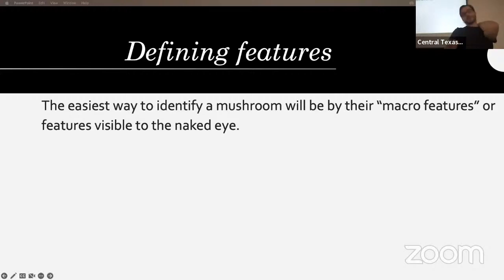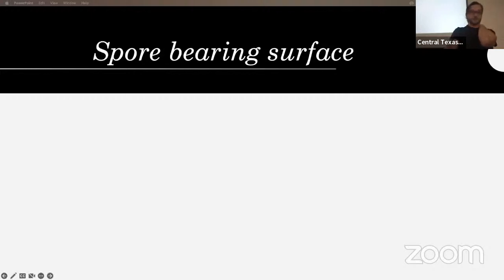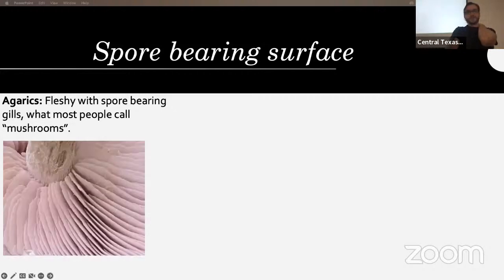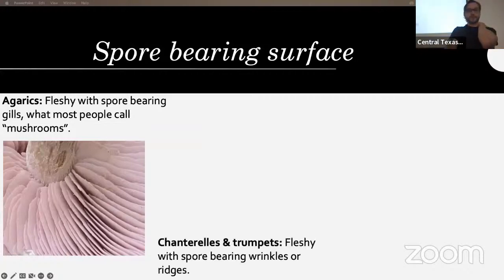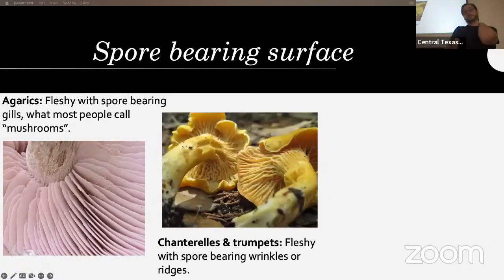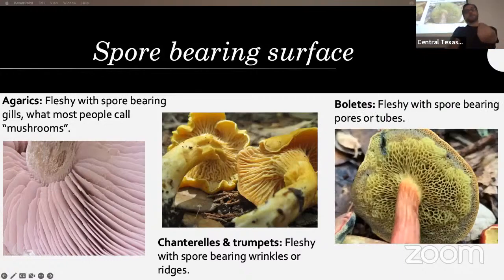Defining features — the easiest way to identify a mushroom will be by their macro features visible to the naked eye. The first thing to narrow down is the type of spore-bearing surface. Agarics are fleshy with spore-bearing gills — what most people think of as mushrooms. Chanterelles and trumpets are fleshy with spore-bearing wrinkles or ridges. Boletes are fleshy with spore-bearing pores or tubes.